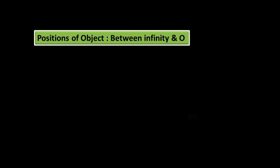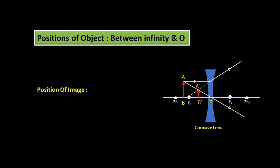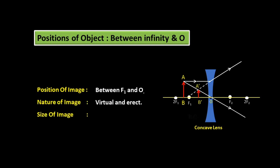For object between infinity and optical center — the ray from object AB parallel to the principal axis, after refraction, diverges and appears to come from focus F1. Another ray through the optical center passes without deviation. The image A'B' forms between F1 and the optical center. Position: between focus and optical center. Nature: virtual and erect. Size: diminished. The image formed by a concave lens at any position is virtual, erect, and small.